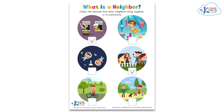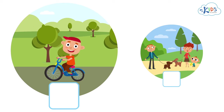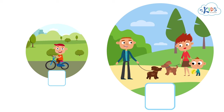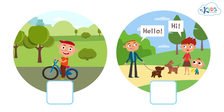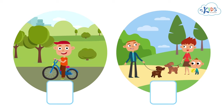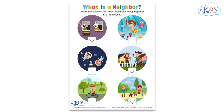Now we have two pictures of people at the community park. In one picture, there is a boy riding his bike alone. In the other picture, there are three people walking dogs. Which of these pictures show neighbors? Sometimes neighbors meet at a common place in the community — they may shop at the same stores or, as you can see, play at the same park. The people in this picture are neighbors.